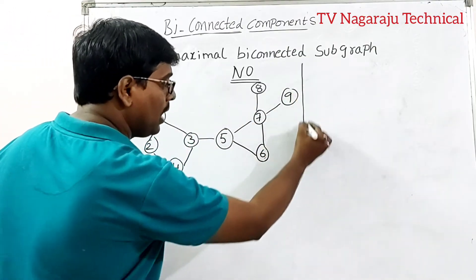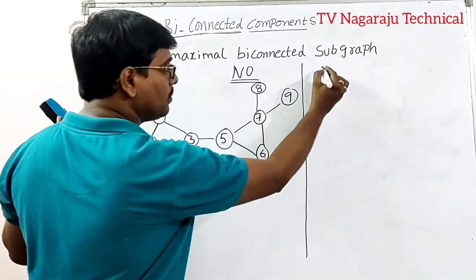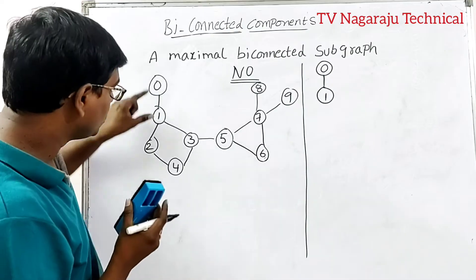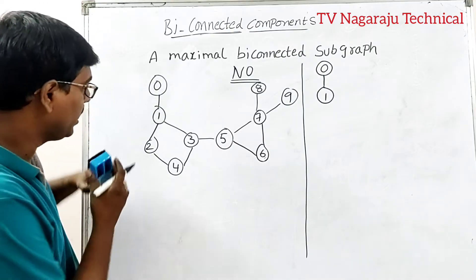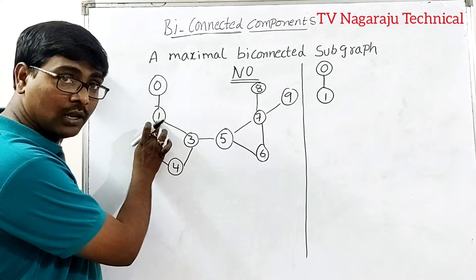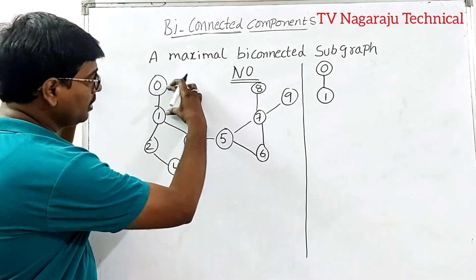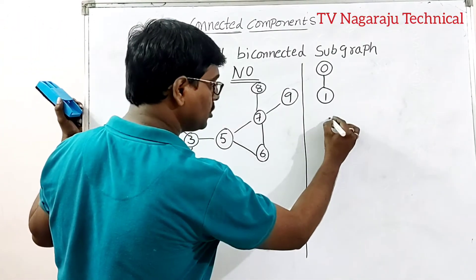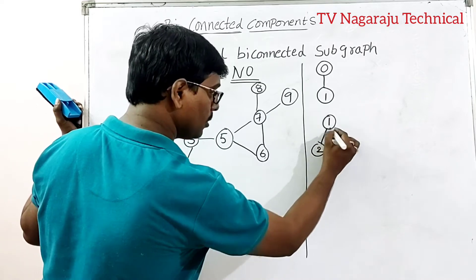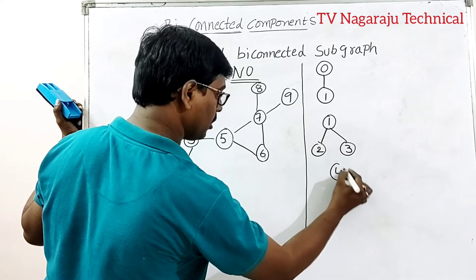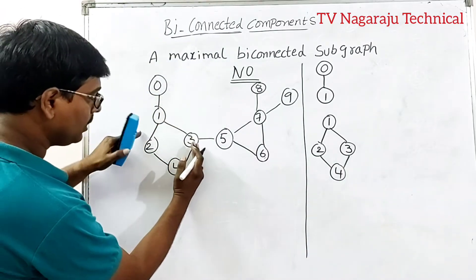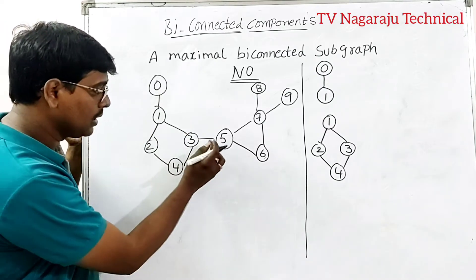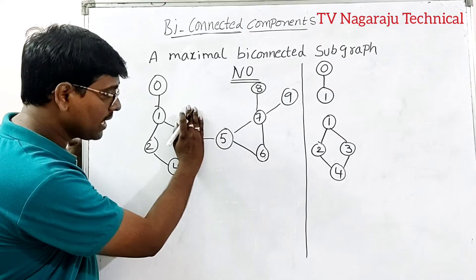Vertex 1 is an articulation point. By removing vertex 1, vertex 0 forms one component and the remaining vertices form another component. So we write down bi-connected component zero-one as a separate component. Since vertex 1 is the articulation point, it is common to both parts. The next component is 1-2-3-4.